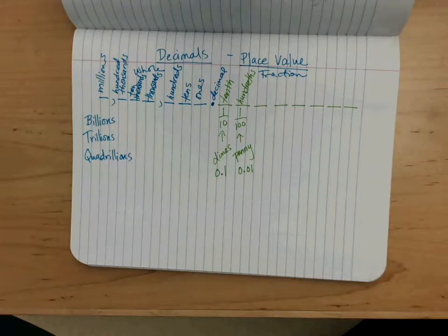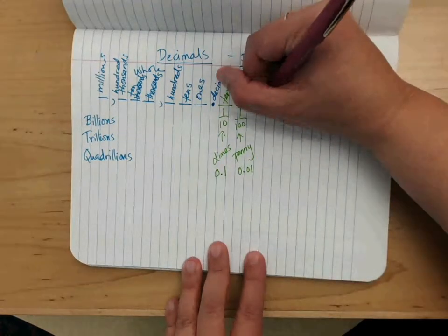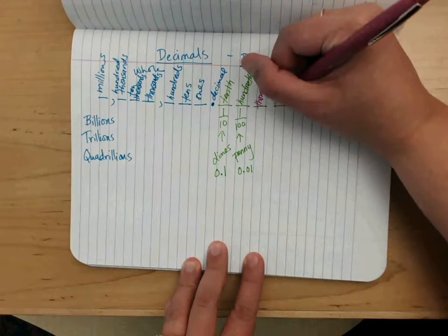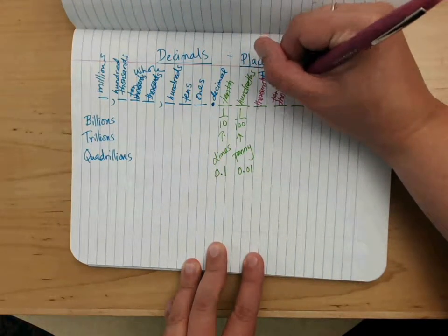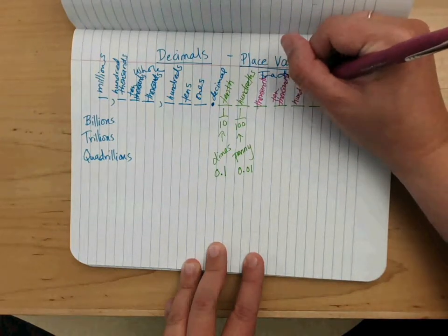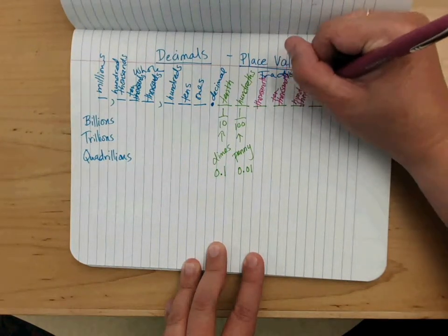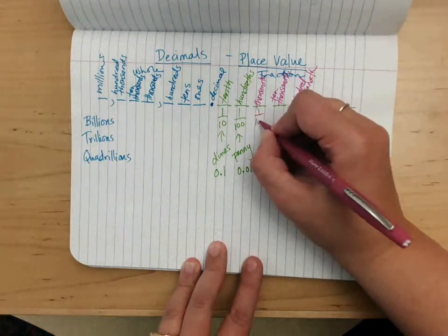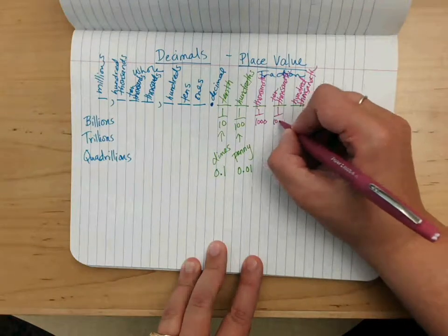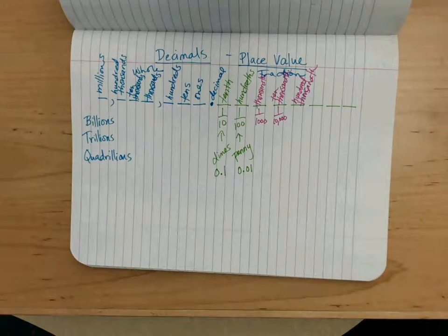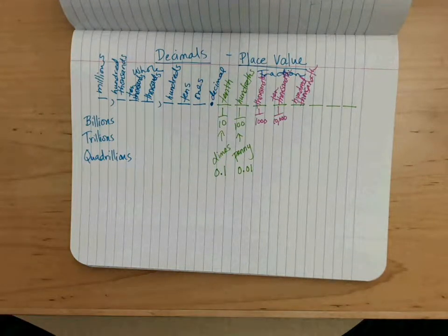After tenths and hundredths, we have thousandths, then ten thousandths, then hundred thousandths. So this represents one divided by a thousand, one divided by ten thousand — it gets hard to write all those zeros.